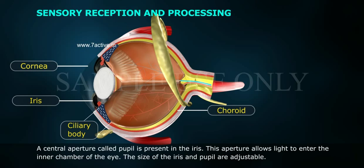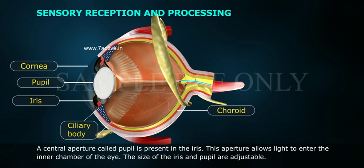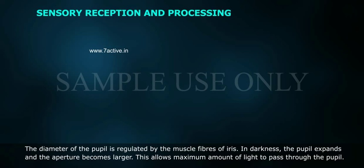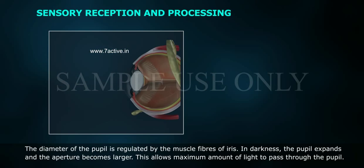A central aperture called the pupil is present in the iris. This aperture allows light to enter the inner chamber of the eye. The size of the iris and pupil are adjustable, and the diameter of the pupil is regulated by the muscle fibers of the iris.